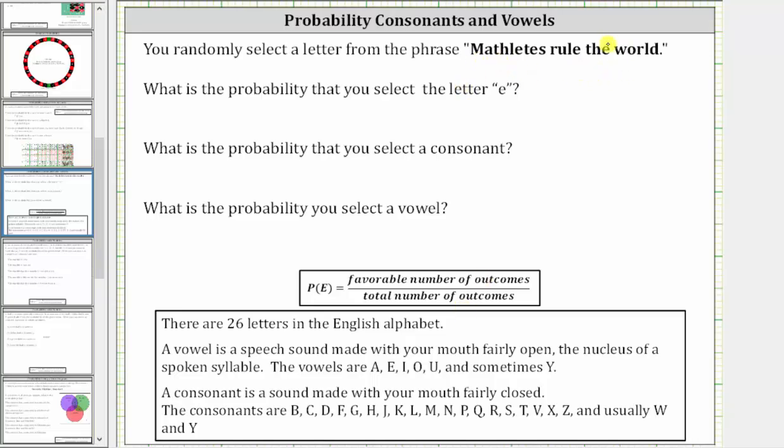Let's begin by counting the letters. The word Mathletes has nine letters. Rule has four letters, the has three letters, and world has five letters. Nine plus four plus three plus five is equal to 21. There are 21 letters in the phrase, and therefore the total number of outcomes will always be 21. Let's make a note here there are 21 letters.